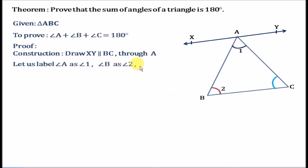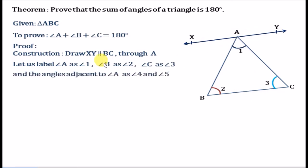Angle B as angle 2 and angle C as angle 3. We are doing this for the sake of convenience, because after drawing line XY parallel to BC we have multiple angles at vertex A — we have angle XAB, angle BAC as the original interior angle of the triangle, and angle YAC. To remove the confusion we have numbered the angles. The construction of XY parallel to BC gives us two more angles around angle A, which we name angle 4 and angle 5.